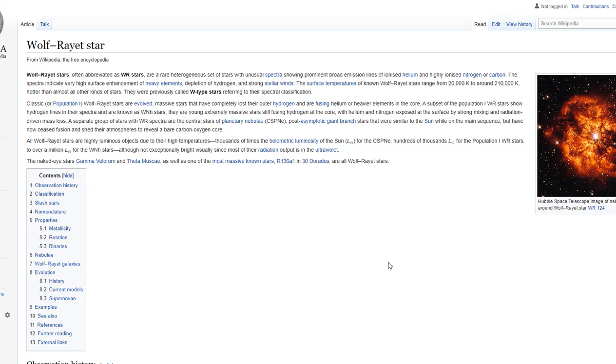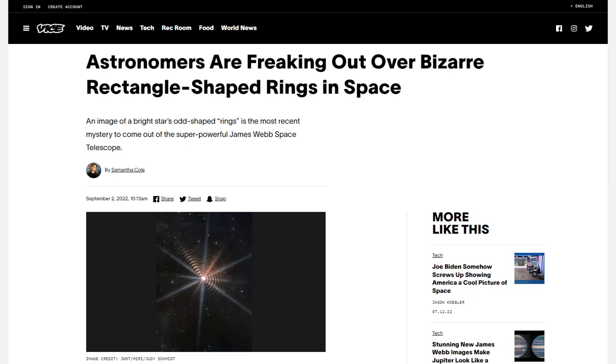The surface temperature of known Wolf-Rayet stars range from 20,000 Kelvin to around 210,000 Kelvin. Hotter than almost all other kinds of stars. They were previously called W-type stars referring to their spectral classification.